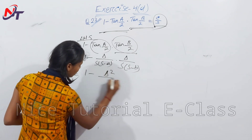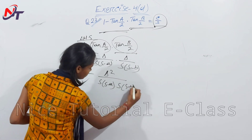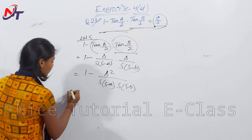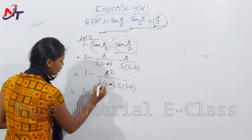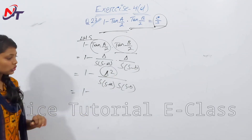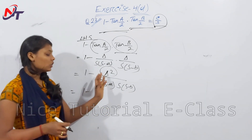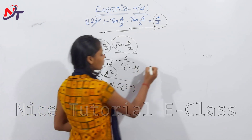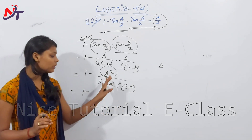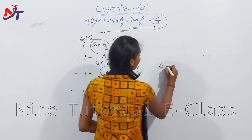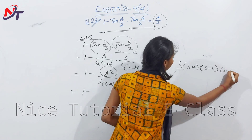Δ² divided by s(s-a)·s(s-b). Then simple subtraction: 1 minus Δ²/Δ². Using the projection formula and the area of the triangle: Δ = √[s(s-a)(s-b)(s-c)].